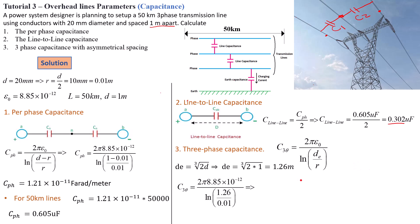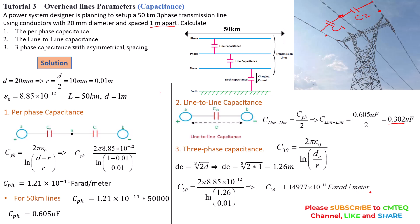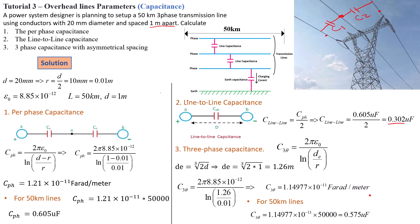Multiplying by 50,000 meters to get the capacitance for the 50-kilometer line gives an overall three-phase capacitance of 0.575 microfarad. As you can see, the three-phase capacitance is very close to the per-phase capacitance when calculating between the phase and the neutral.